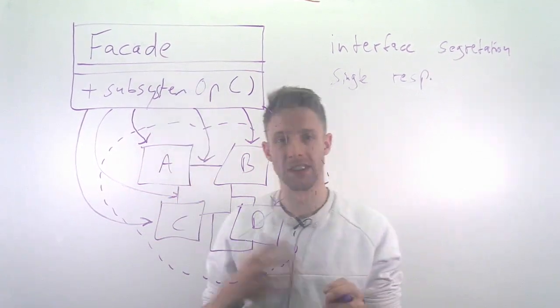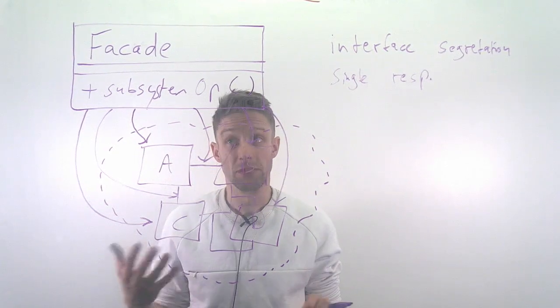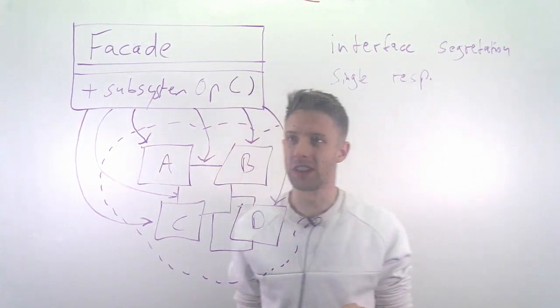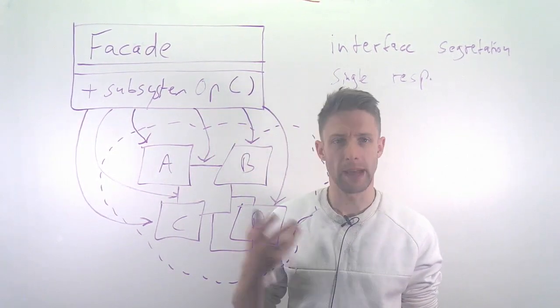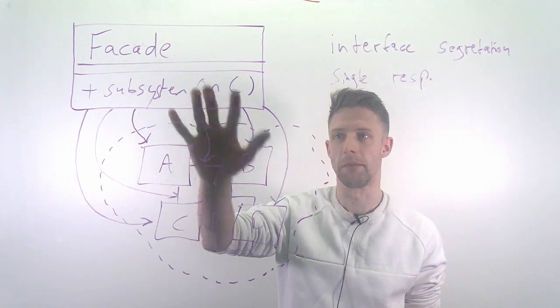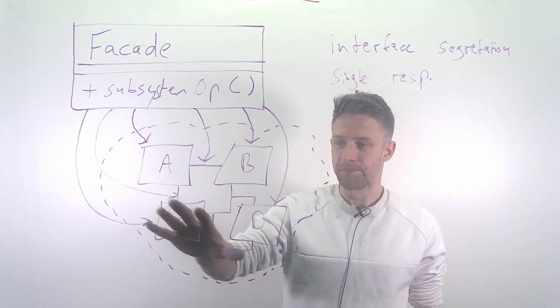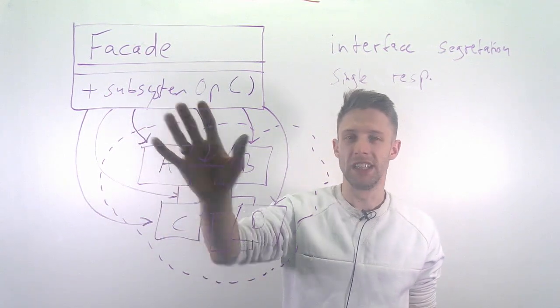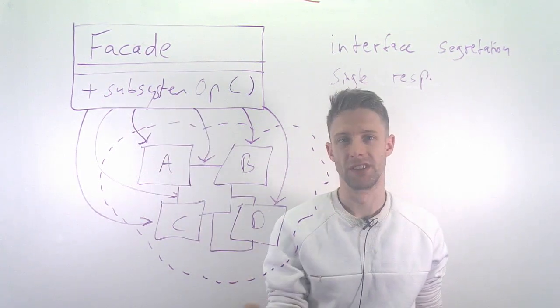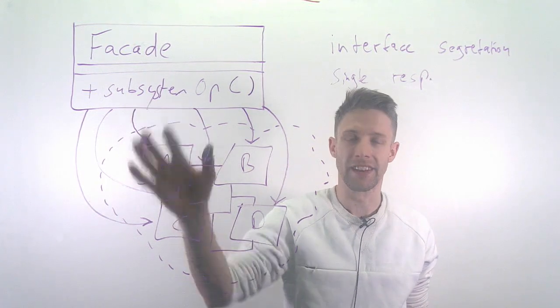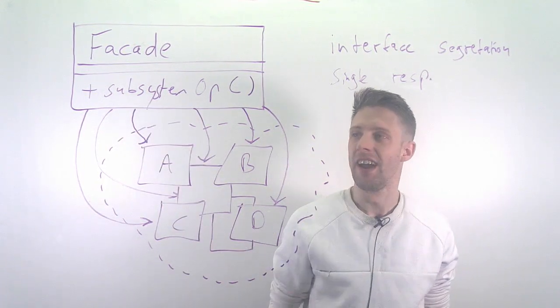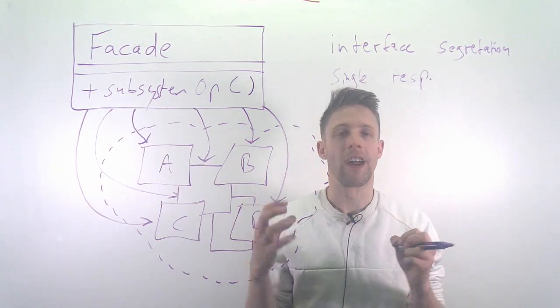So that's the facade pattern. You might wonder what's the difference to the adapter pattern, because here we're also providing a different method than before. The adapter pattern really is just some kind of conversion—you convert the method name, you convert the data. It's just plug-and-play.